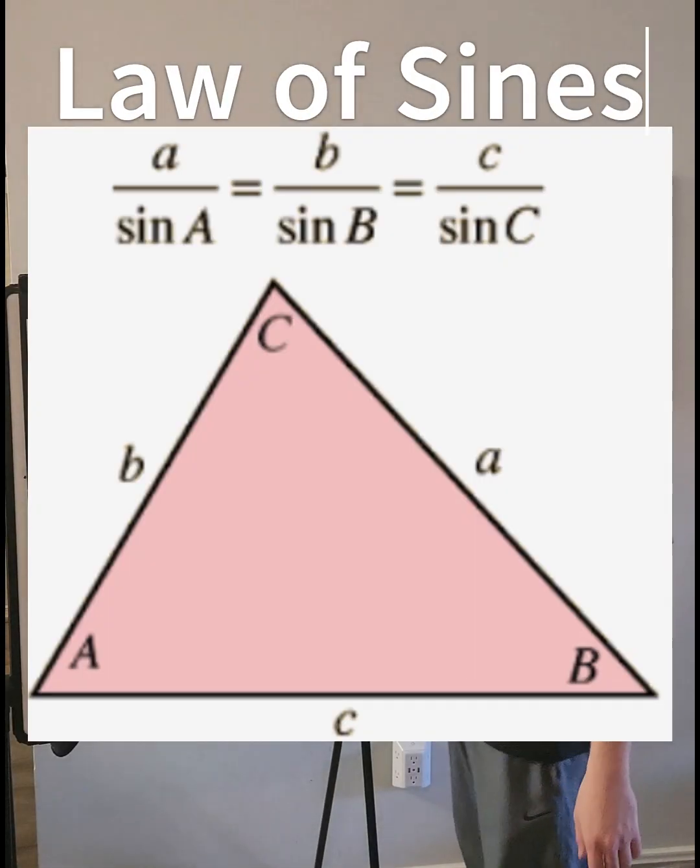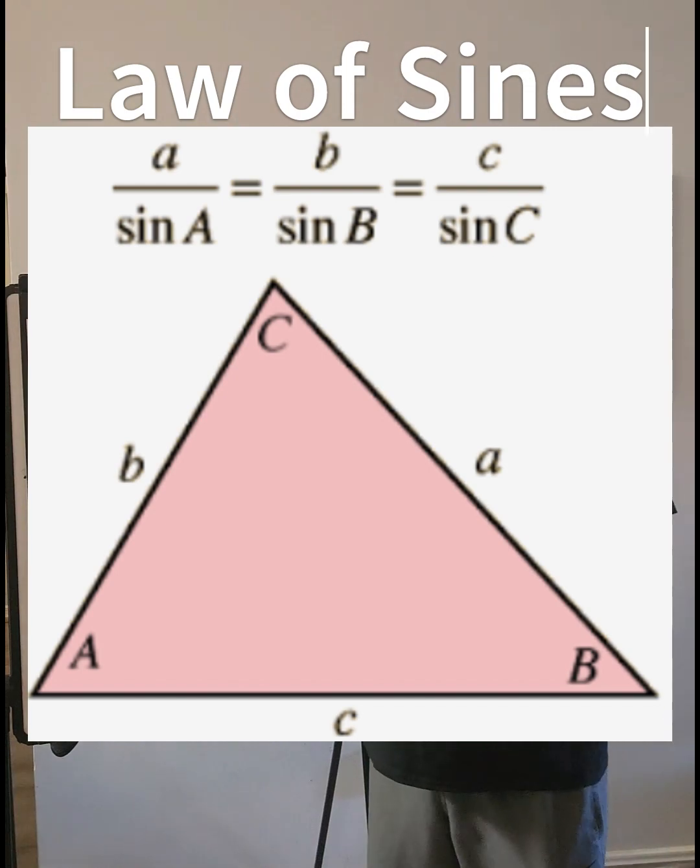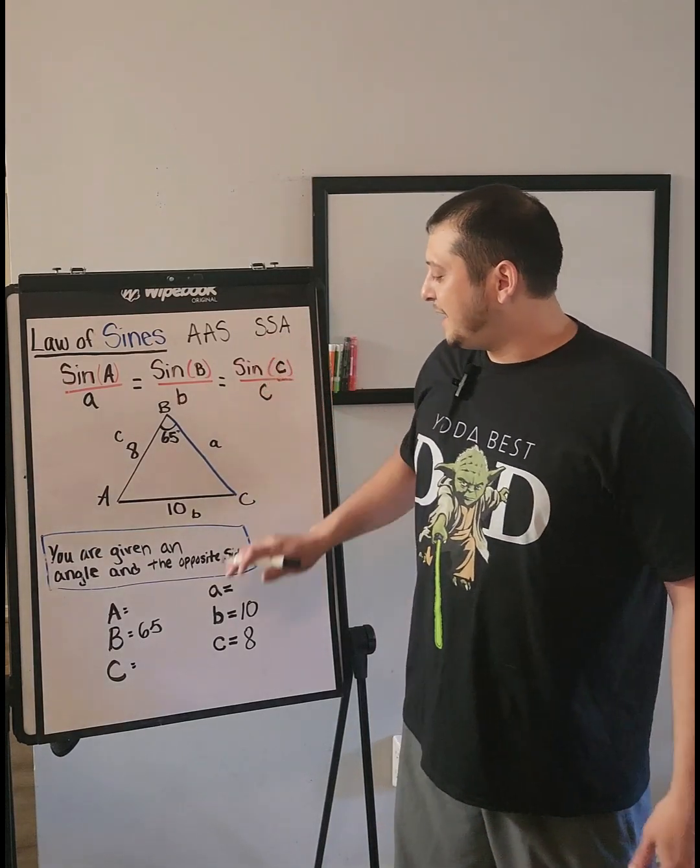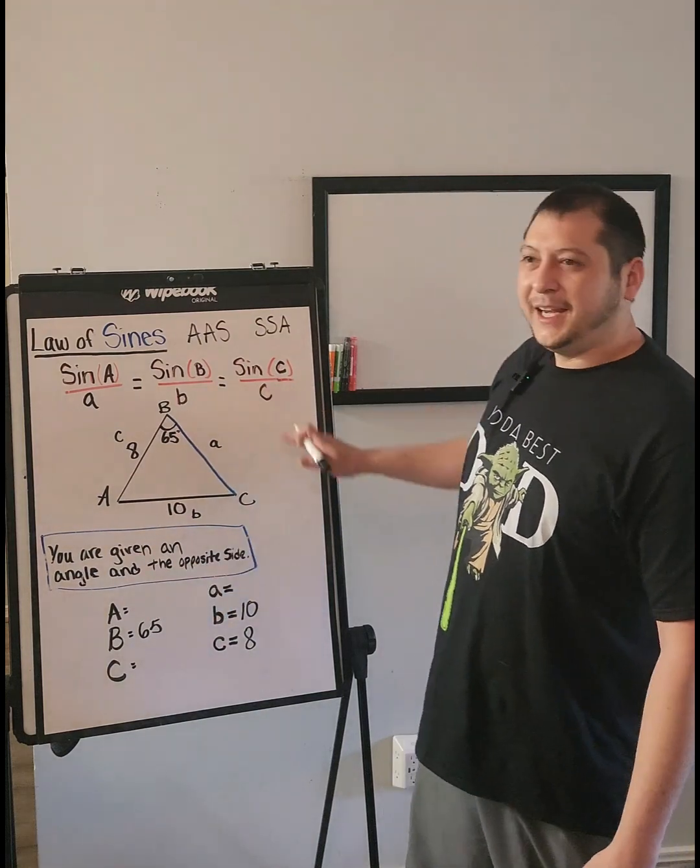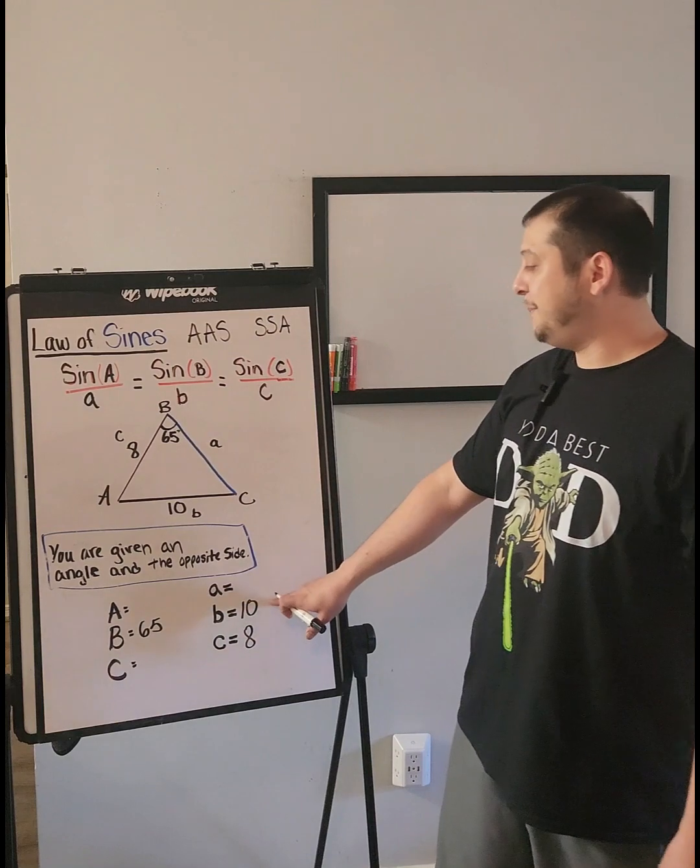I have the Law of Sines. What is it used for? Why is this important? You can use the Law of Sines to find the unknowns on any triangle. You must be given an angle and the opposite side.